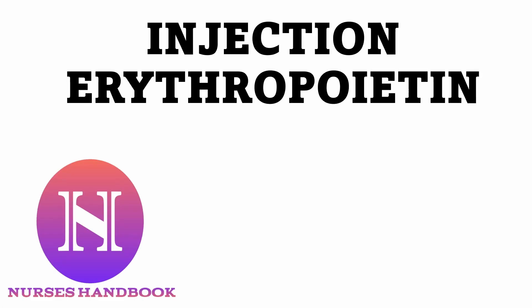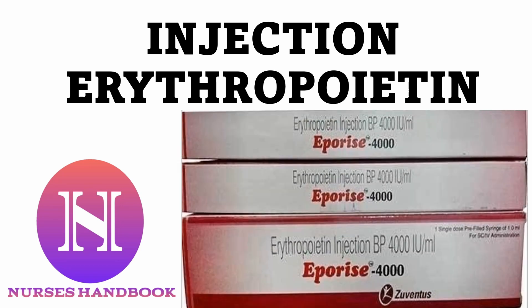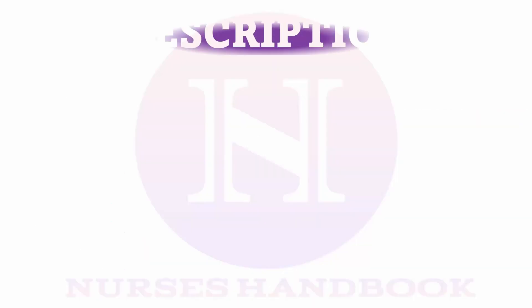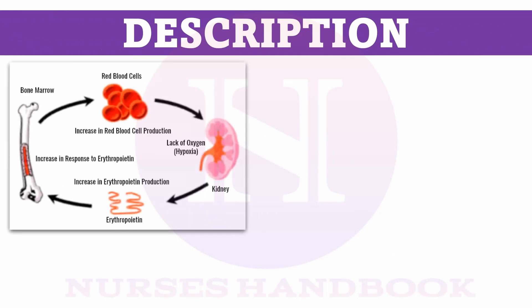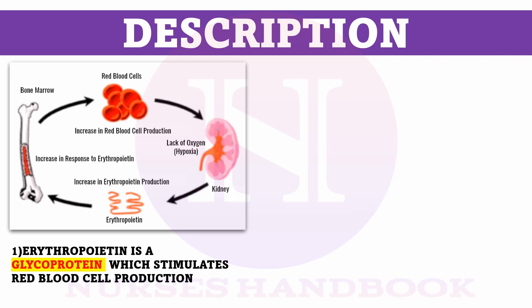Hello and welcome to Nurses Handbook. Today we will be discussing injection erythropoietin, which is widely used in several disease conditions. RBCs are produced in the bone marrow. In order to make RBCs, the body maintains an adequate supply of erythropoietin, which is a glycoprotein that is produced by the kidneys.